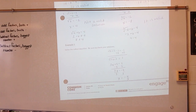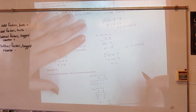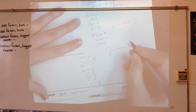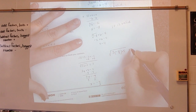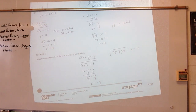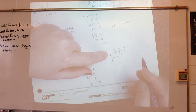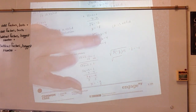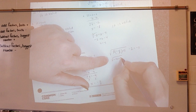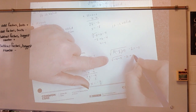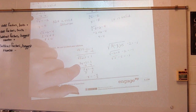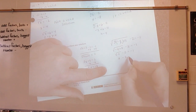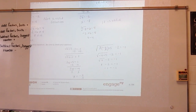It says be sure to check your solution. So 3 times negative 4 thirds plus 5 minus 2 equals negative 1. The 3s cancel out: negative 4 plus 5 minus 2 equals negative 1. The square root of 1 minus 2 equals negative 1. The square root of 1 is 1. 1 minus 2 equals negative 1. Negative 1 equals negative 1, so it is a valid solution.